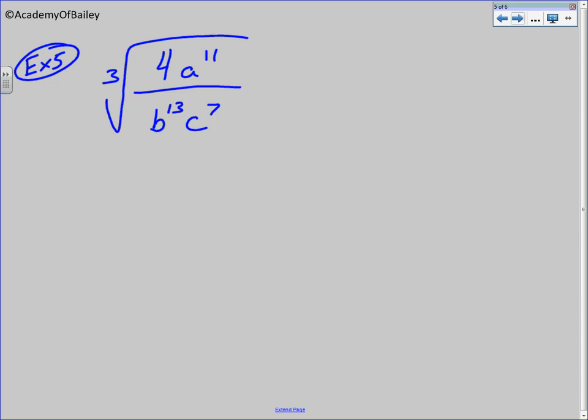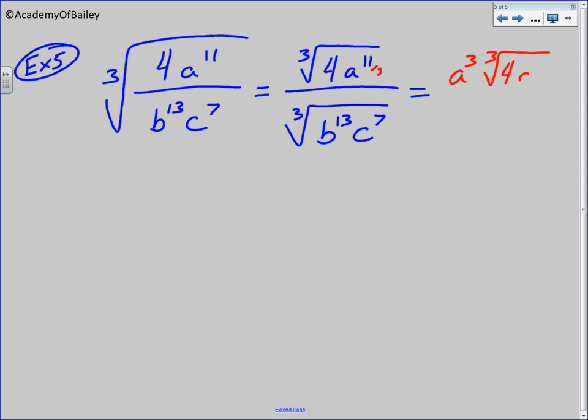And if we look at a situation like this, we're still going to do the same exact thing. Since it's just one fraction bar inside. And we cannot do any simplifying to 4a to the 11th divided by b to the 13th and c to the 7th. We can't simplify any of that. So we're going to split it up to look like this. And then now we're going to simplify the top part.